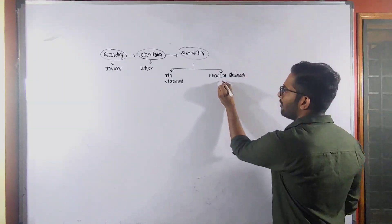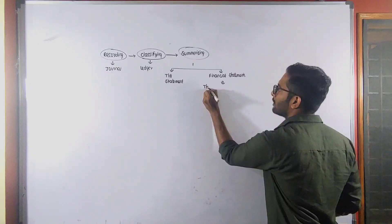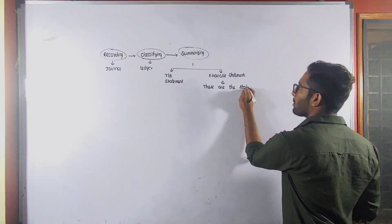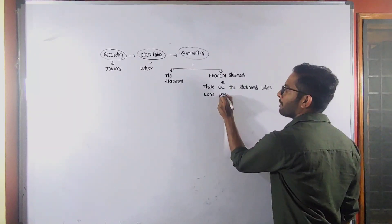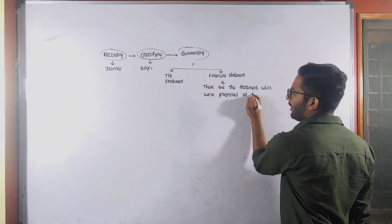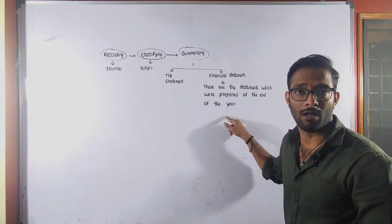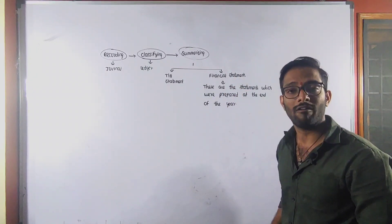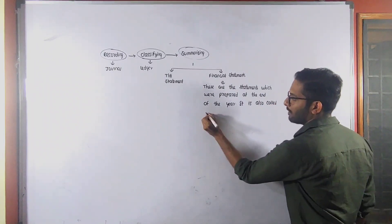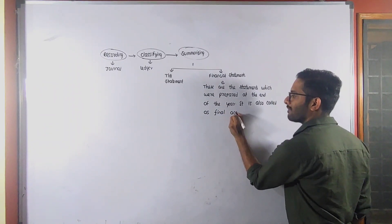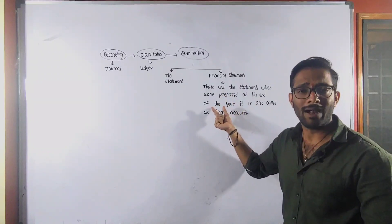What is the meaning of financial statements? Financial statements are the statements which are prepared at the end of the year. Because they are prepared at the end of the year, financial statements are also called final accounts.